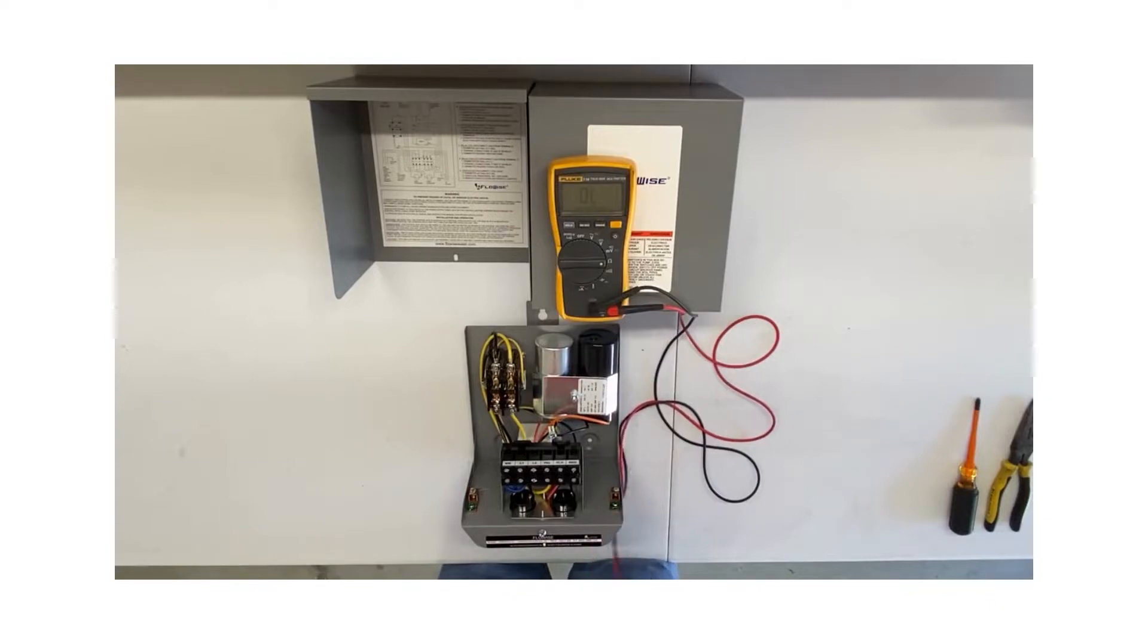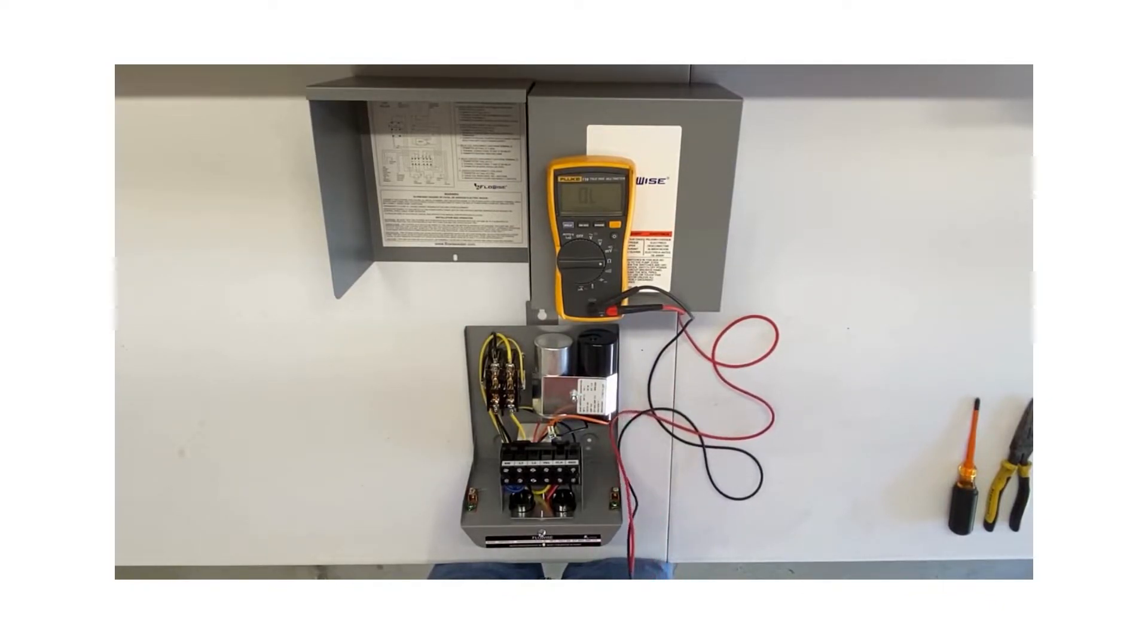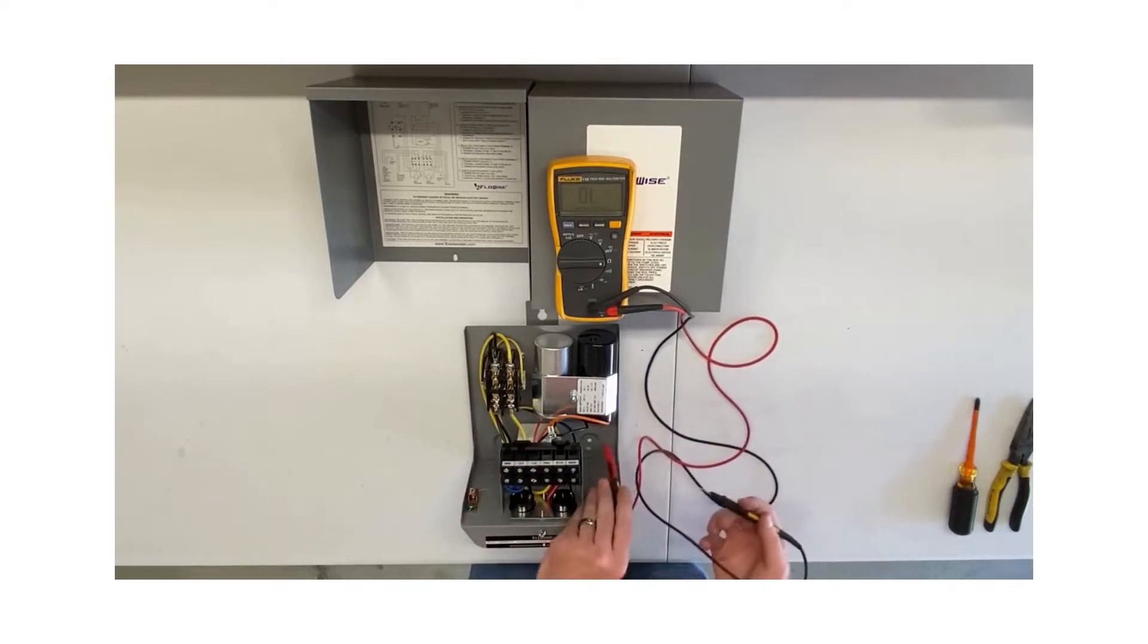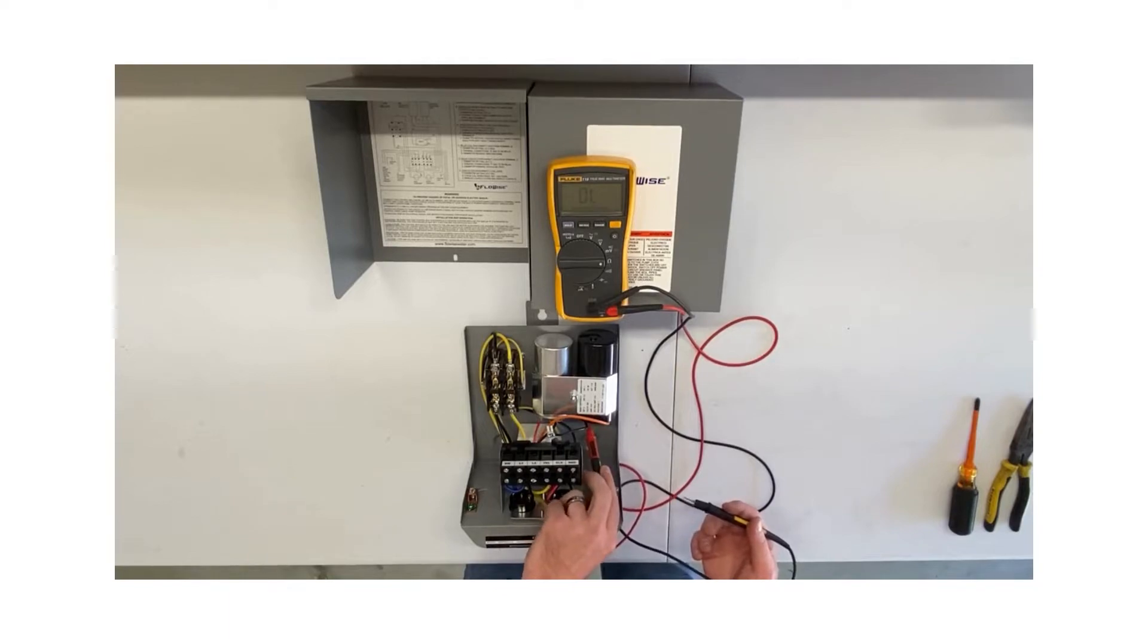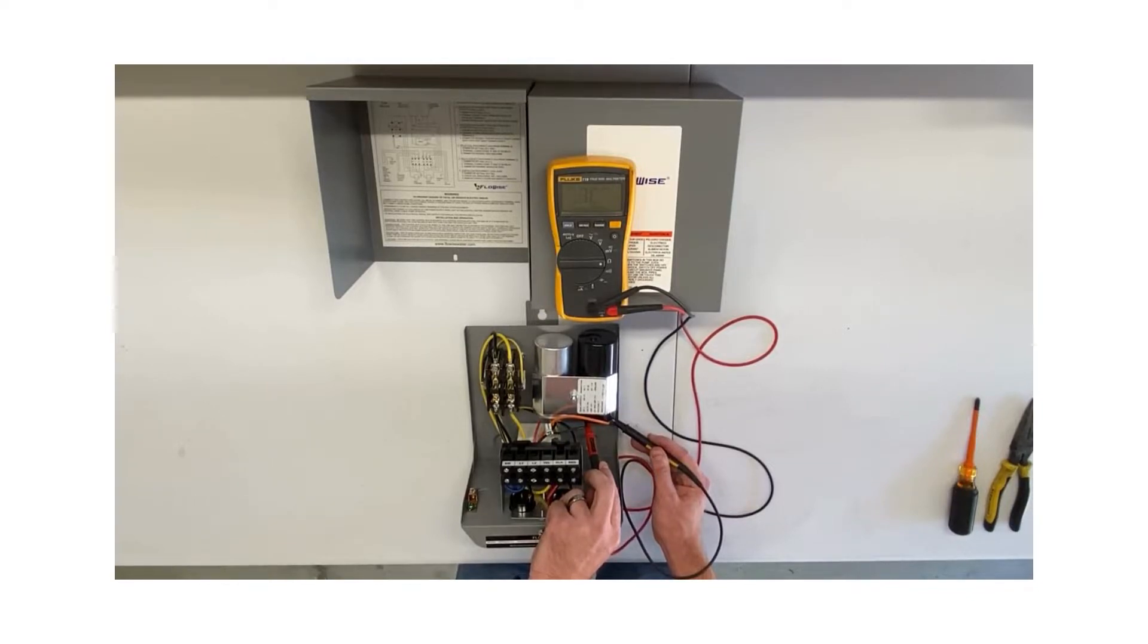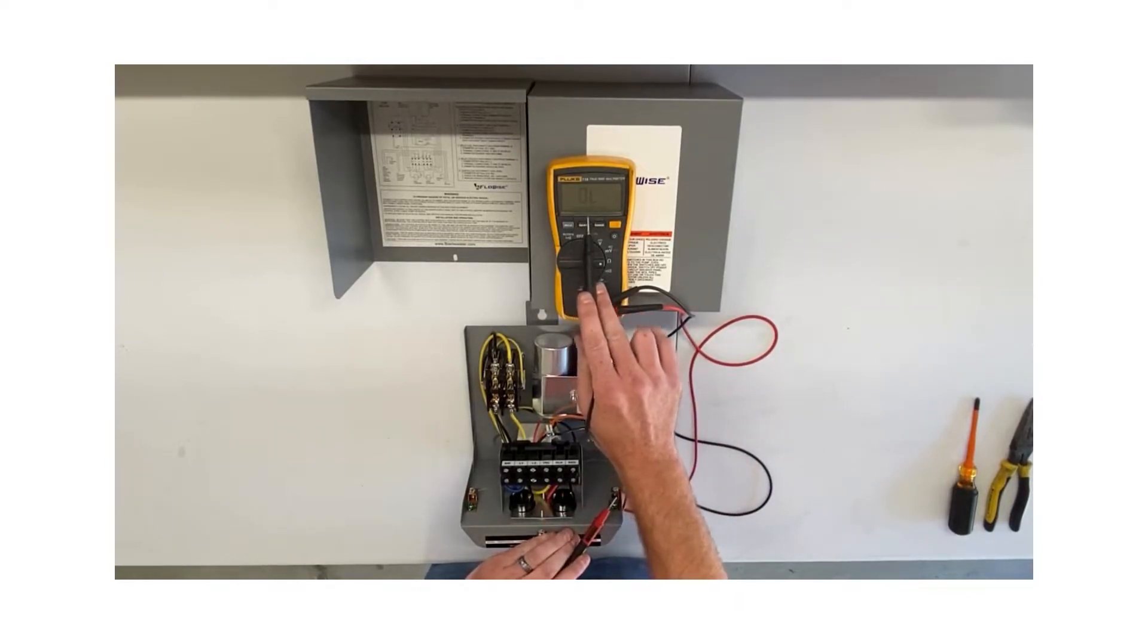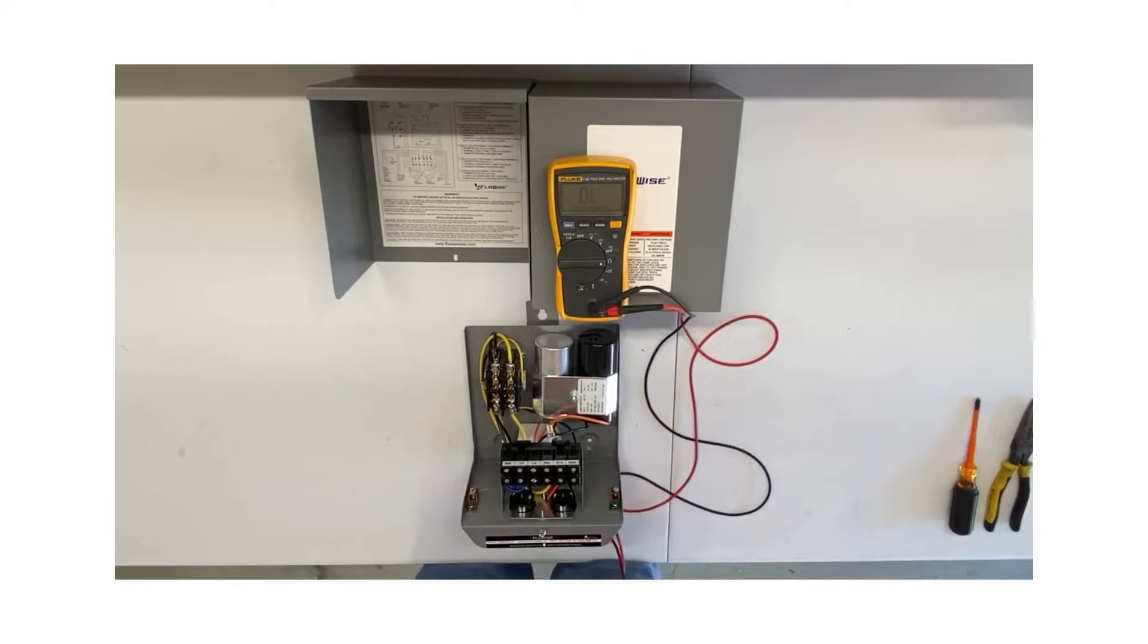With the meter still set on ohms, I'm going to press the button until I get to thousands, K ohms. If you're using an analog meter, you're going to be at R times 1000. I'm going to take one lead and touch to one post on one side of the capacitor and the other lead to the opposite side. It started really low, climbed until it maxed out, and then went to OL—over limit. The manufacturer says if you're using an analog meter, the needle should swing to zero and swing back towards infinity. That's what our digital meter just did. That's equivalent to infinity, so we know that capacitor is good.